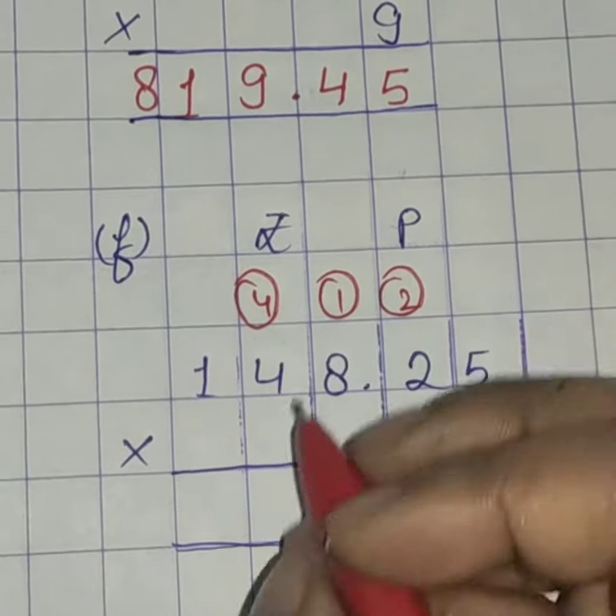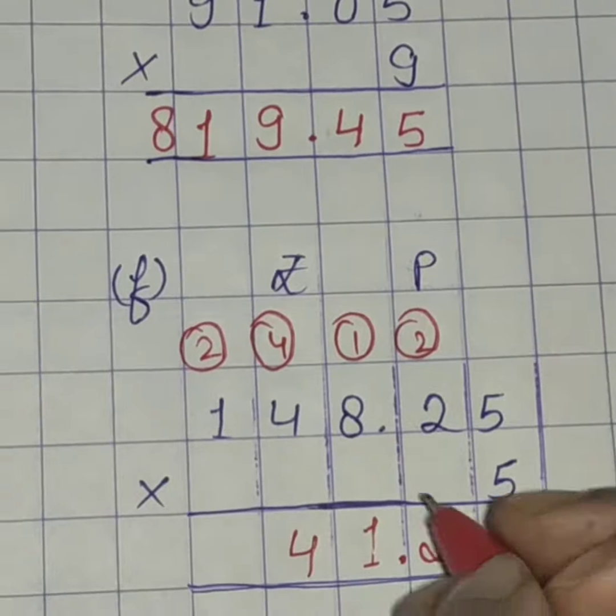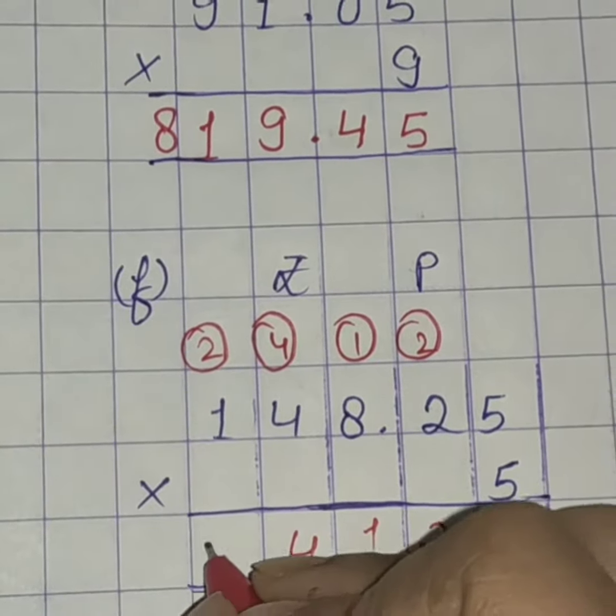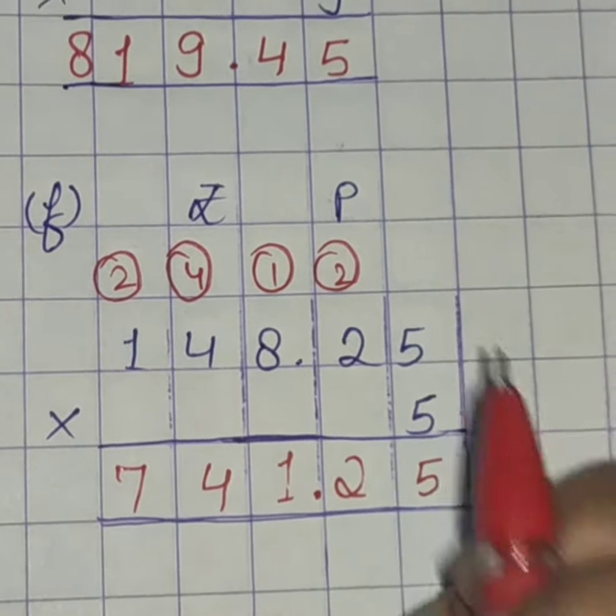5, 4's are 20. 20 plus 4, 24. 4 here, 2 as a carryover. 5, 1's are 5. 5 plus 2, 7. So, the answer is 741 rupees and 25 paise.